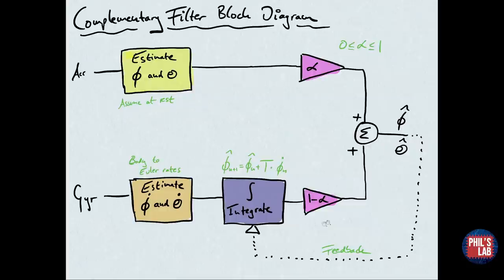We multiply that integral by one minus alpha, and finally, we sum those two branches together from the accelerometer and the gyroscope to give our angle estimates. But let's go through this in detail again.